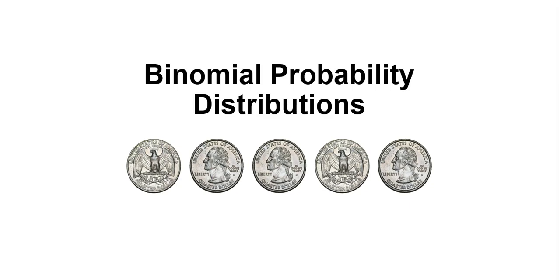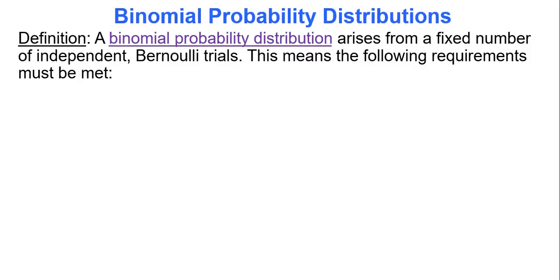Binomial probability distribution is a type of discrete probability distribution. It arises from a fixed number of independent what we call Bernoulli trials. The following four requirements must be met.